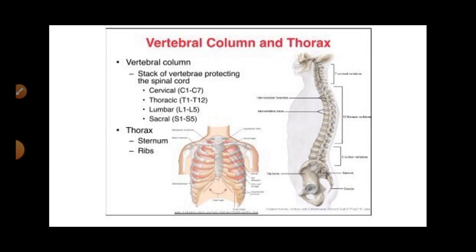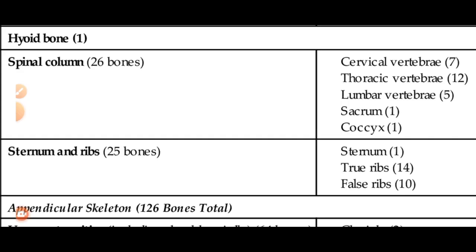Today we will learn what the vertebral column is, its functions, and what the thoracic cage is and its function — a short introductory video. The spinal column contains 26 bones and is divided into cervical vertebrae which is 7 in number, thoracic vertebrae which is 12 in number, lumbar vertebrae which is 5 in number, sacrum 1 in number, and coccyx 1 in number.